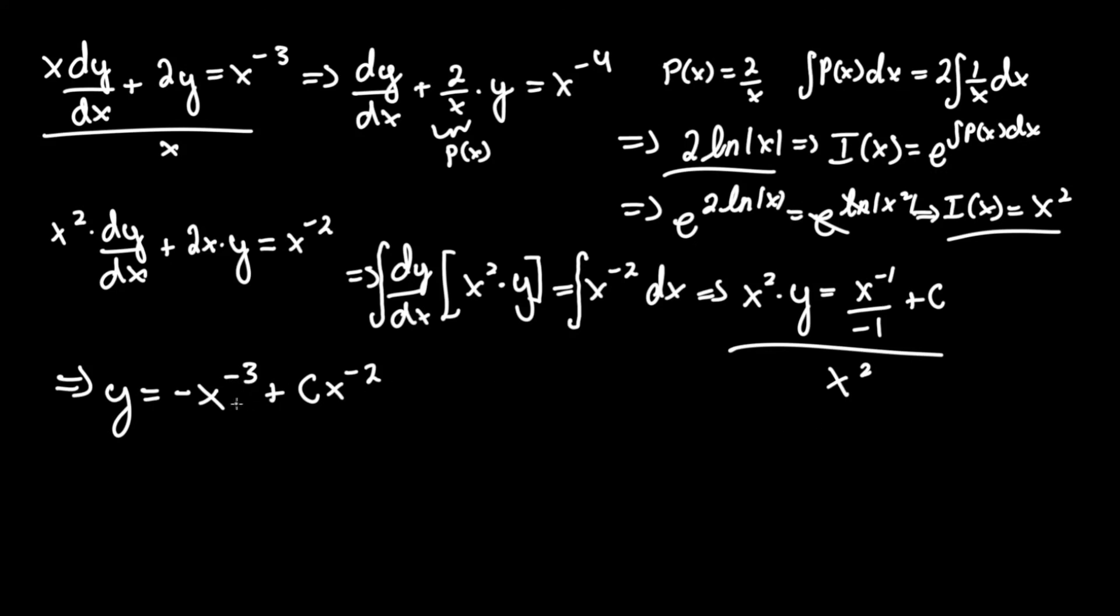This is equivalent to c/x^2. You can write it either way. This is our answer: y = -x^(-3) + c*x^(-2). Remember, the c does not absorb the x, since x is not a constant. If you have any questions, please leave them in the comments below, and good luck.